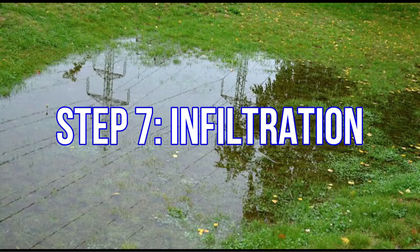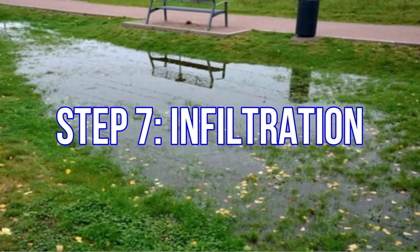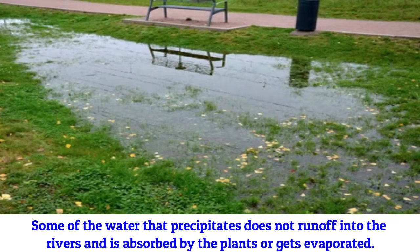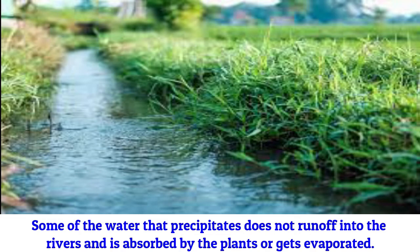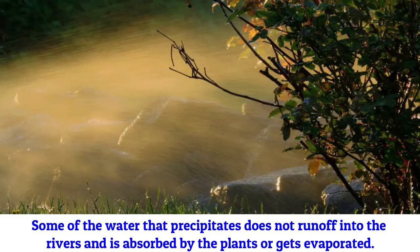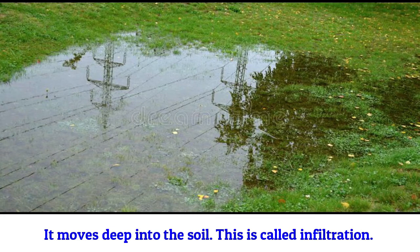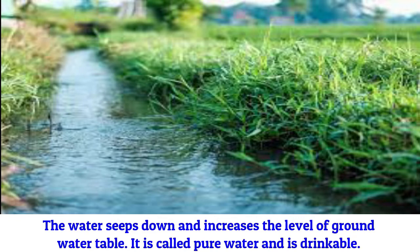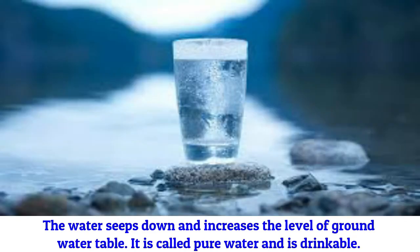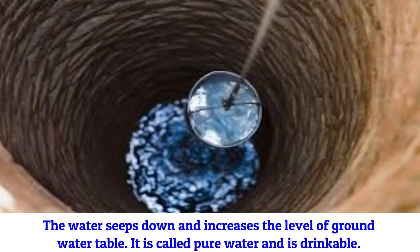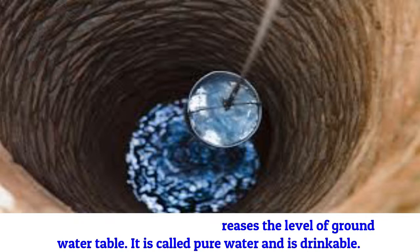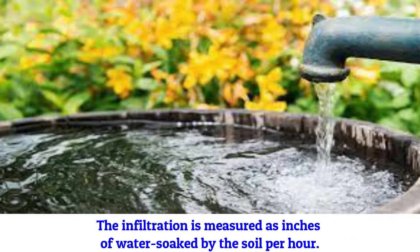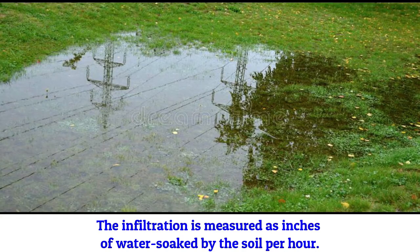Step 7: Infiltration. Some of the water that precipitates does not run off into the river and is absorbed by plants or gets evaporated. This is called infiltration. The water seeps down and increases the level of the groundwater table. It is called pure water and is drinkable. The infiltration is measured as inches of water soaked by the soil per hour.